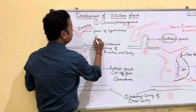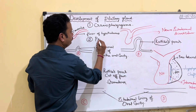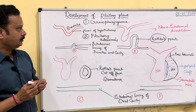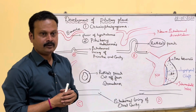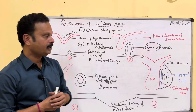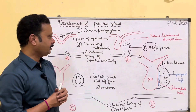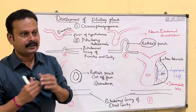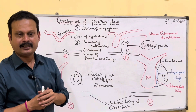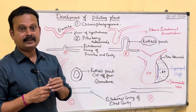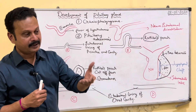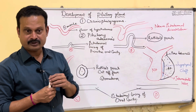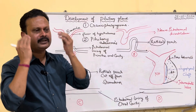Pituitary adenomas or pituitary tumours are usually found in the anterior lobe. Chromophobe adenoma is usually seen in elderly women, characterized by headache and bitemporal hemianopia. Acidophil adenoma gives rise to gigantism in children and acromegaly in adults. Basophil adenoma is most commonly seen in women and gives rise to Cushing syndrome, characterized by fatty growth in the region of the head, neck, and trunk.